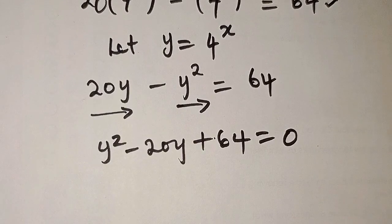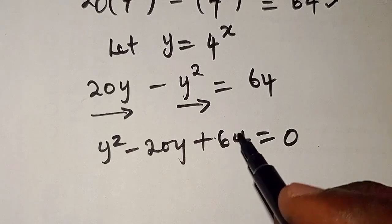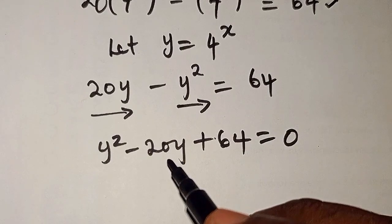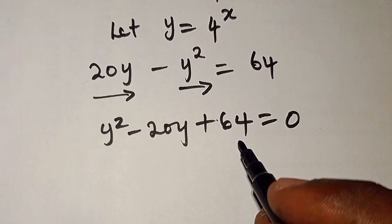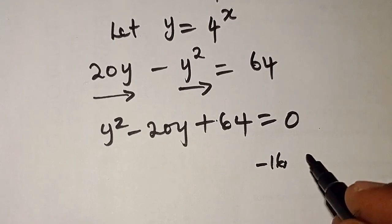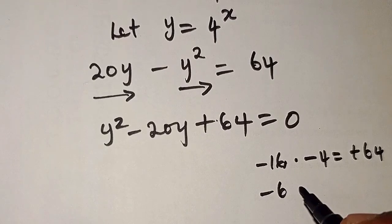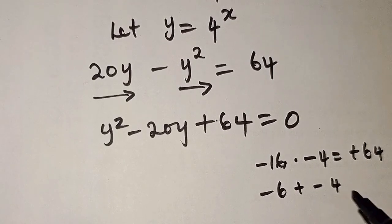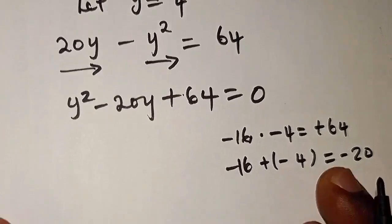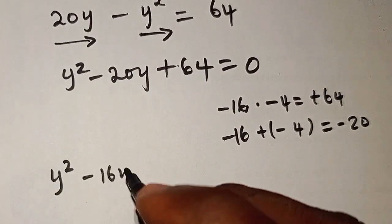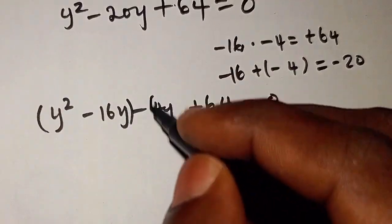The next thing we're going to do is look for the possible factors of 64: when we multiply the two factors together we must get plus 64, but when we add them together we must get minus 20. We can see that minus 16 multiplied by minus 4 gives plus 64, and minus 16 plus minus 4 gives minus 20. So we use minus 16 and minus 4, giving us y squared minus 16y minus 4y plus 64 equals 0.